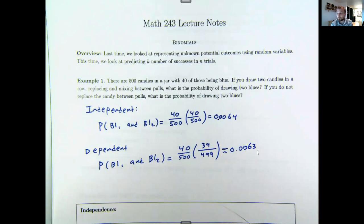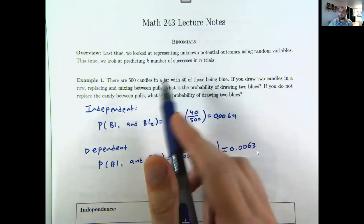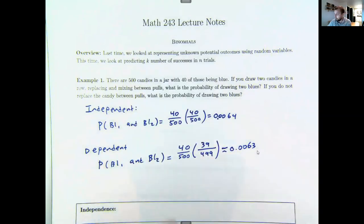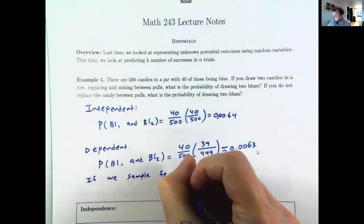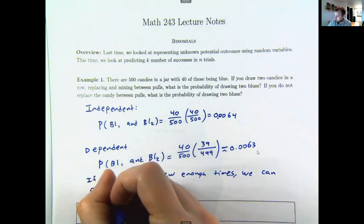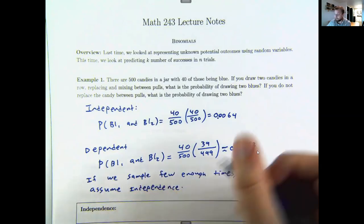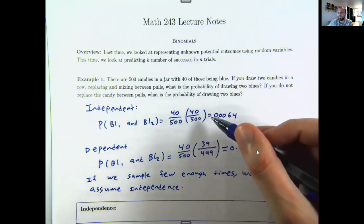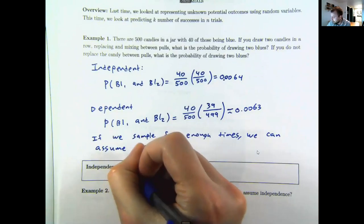Comparing these two numbers, they're remarkably close — which might be a surprise. But if you think about the number of candies, one candy out of 500 is really hard to notice. As a general observation, if we sample few enough times we can assume independence. Situations that are independent are considerably easier to deal with mathematically than dependent ones.